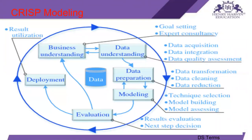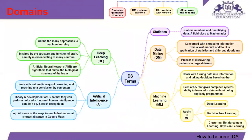Some key terms in the data analytics domain: statistics quantifies numbers, data mining explains patterns, machine learning predicts with models, and AI behaves and reasons. The data analytical domain is evolving from statistics to data mining to machine learning to AI, and this is the progression you will also move through as you advance.